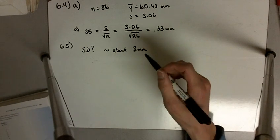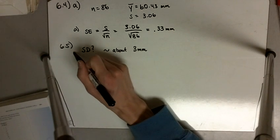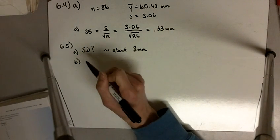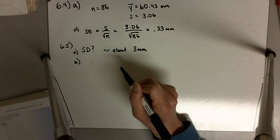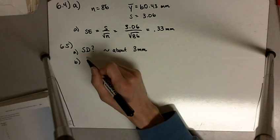However, part B asks, what would you predict the standard error of the mean to be for the 500 new measurements?